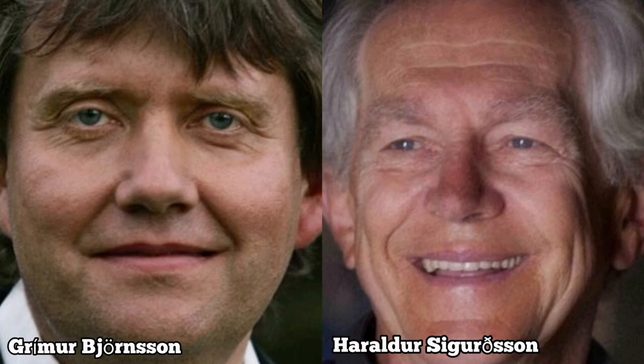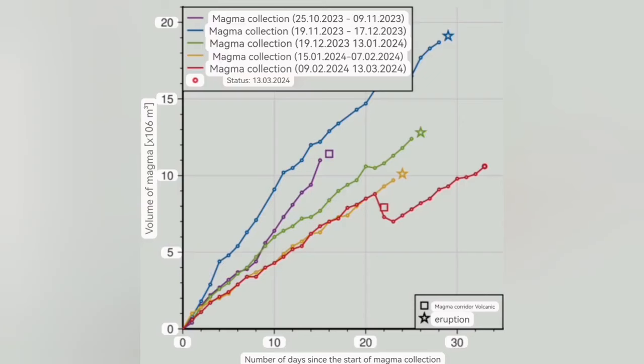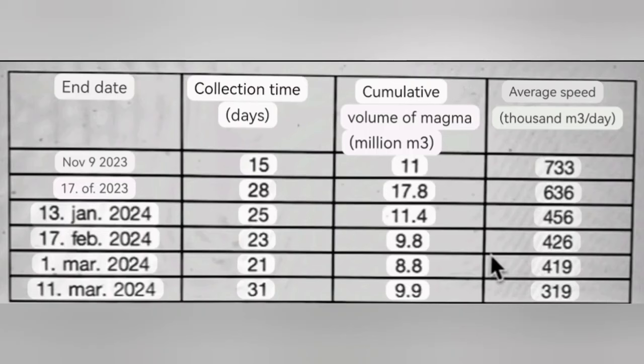Very simple, it shows what the Icelandic Meteorological Office have provided in the numbers of the days past since accumulation of the magma started to the time that it erupted. So cumulative volume of the magma is in the column third, you can see it here, and the collection time for that magma to gather under the Svartsengi volcanic system is in the column two.